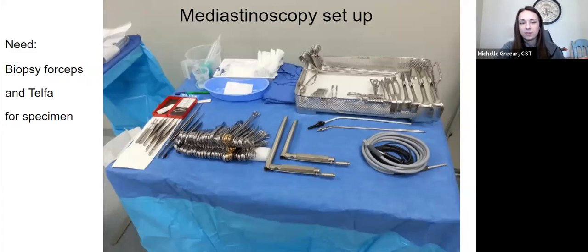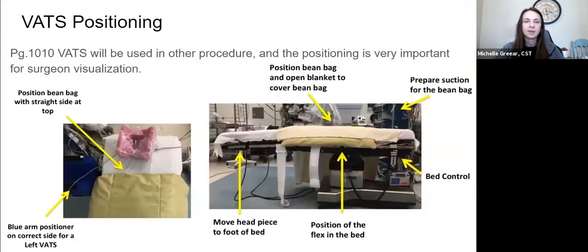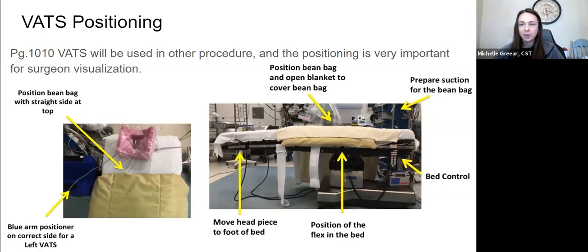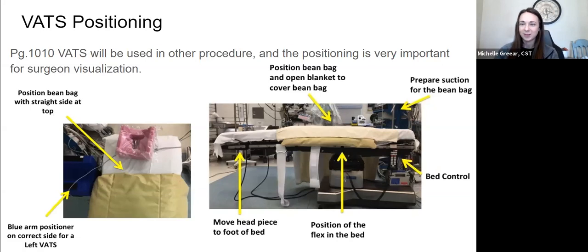That brings me to VATS — video assisted thoracic surgery. Thoroscopy or VATS could be so many different things: a wedge lung resection, anything for diseases of the esophagus, lungs, mediastinum. So many options. It's minimally invasive — we're avoiding a big open chest surgery. Because of that, positioning is very important. I've seen it where we were prepped, draped, ready to go, and the surgeon scrubbed in, palpated and said the drape is covering where I'd like to make my incision — you did a bad job positioning, let's start over. Positioning is very important for these cases. Look at this slide — the beanbag is positioned, the blue armboard is out to the side, and you're going to move the headpiece of the bed to the foot.